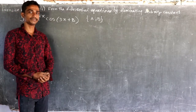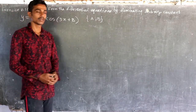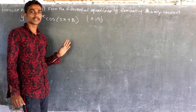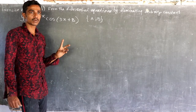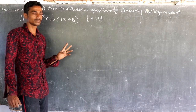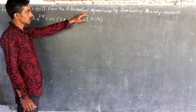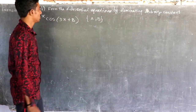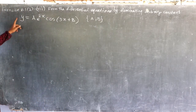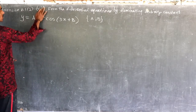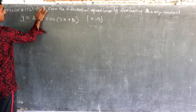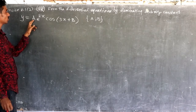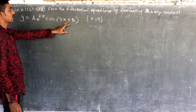What is the problem? This is the 8th part of Exercise 8.1, the 9th division problem. We need to form the differential equation by eliminating arbitrary constants. The 8th problem: y is equal to a e^(2x) cos(3x) plus b.